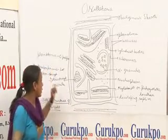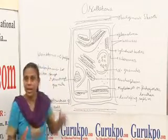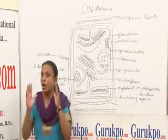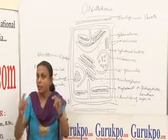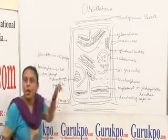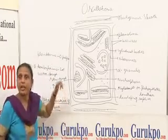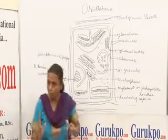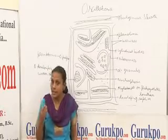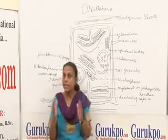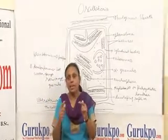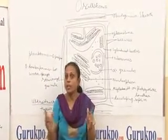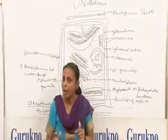Some species of Oscillatoria are growing in hot water springs, known as Oscillatoria terebriformis. And some species are forming blooms on the surface of stagnant pools and ponds.